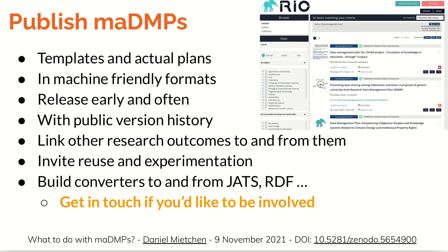Another aspect of what we can do with machine actionable data management plans is publishing them. Some have already been published in various contexts — for instance, a number of DMP tools have collections of plans created using those tools, and there are also some journals that publish them. What is different between publishing traditional data management plans and machine actionable ones is that machine friendliness is more important now.